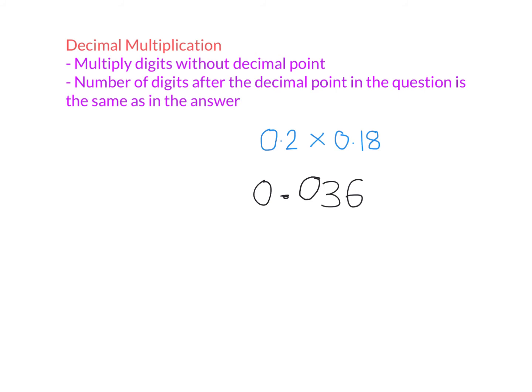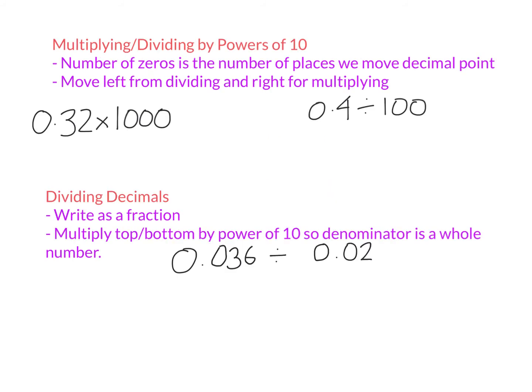Let's now look at multiplying and dividing decimals by powers of 10. A power of 10 is any number that starts with a 1 and ends with zeros — so 1,000, 100, 10,000, and 1,000,000 are all powers of 10. A number like 20 is not a power of 10 because it doesn't start with a 1 followed by zeros. Similarly, 111 is not a power of 10.